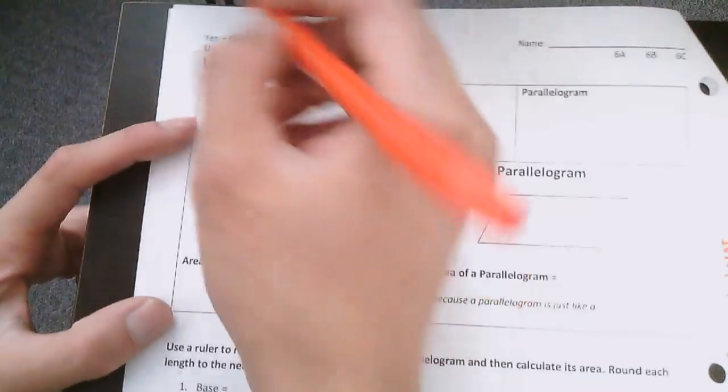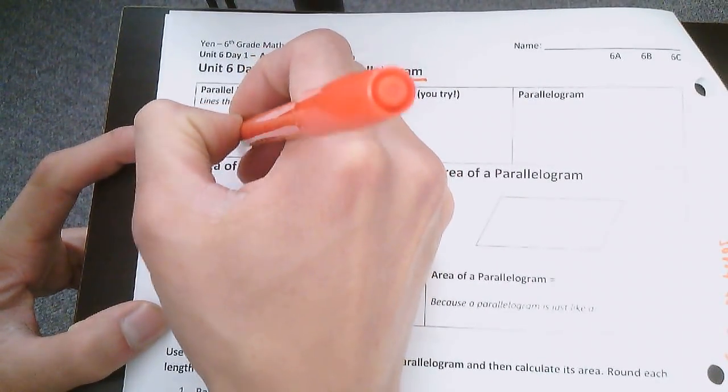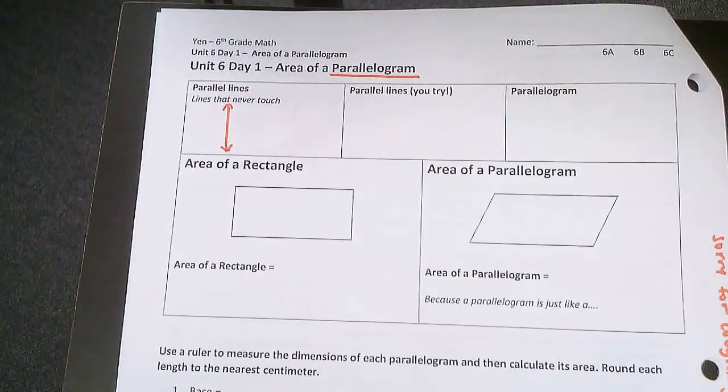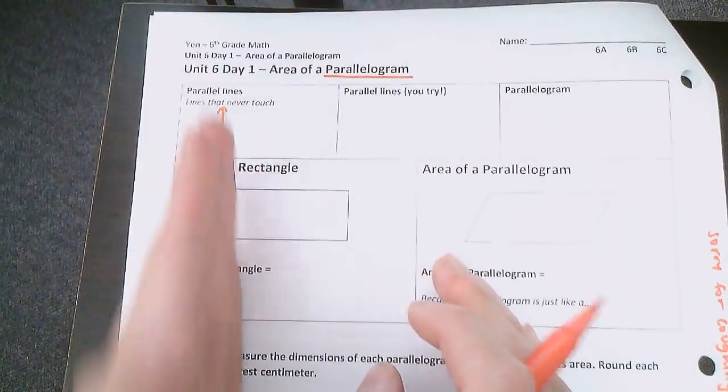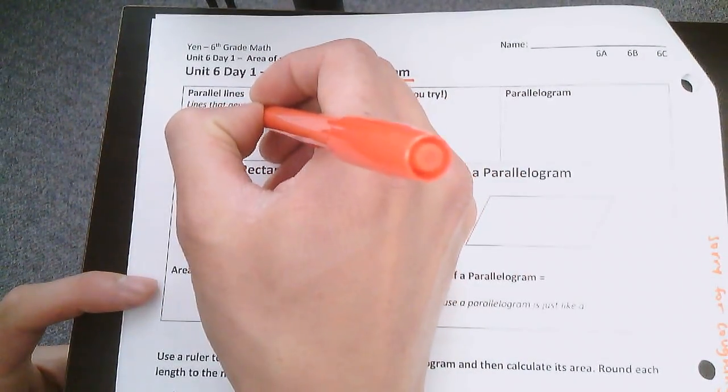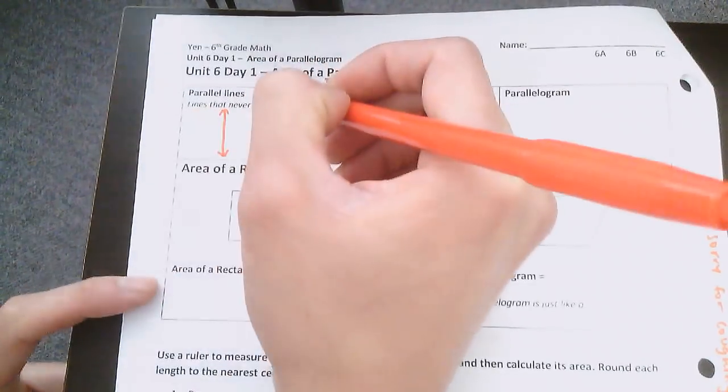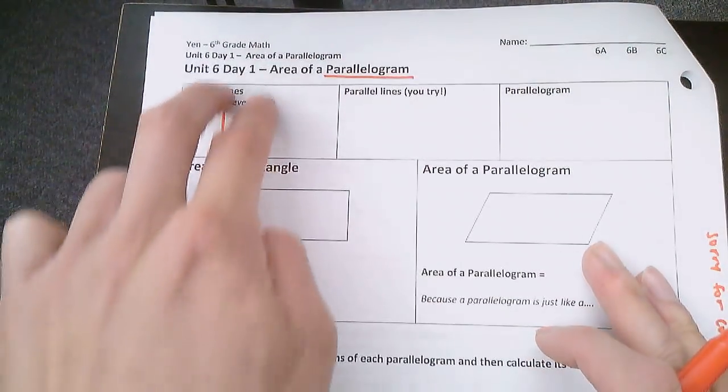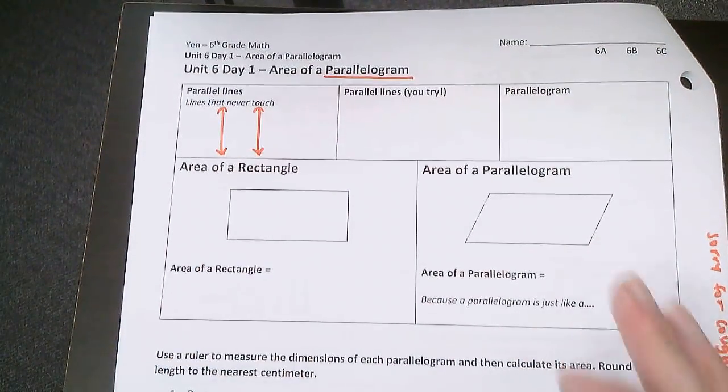So for example, if I have this line right here, imagine it goes on forever. Another line that is parallel to this would be like this. These two lines are parallel because if I extend both of these lines on forever they will never touch.